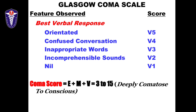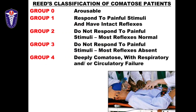Another popular classification is the REITS classification, which ranges from group 0 to group 4. Group 0 is basically arousable. Group 1 responds to painful stimuli and has intact reflexes. Group 2 does not respond to painful stimuli but most reflexes are normal. Group 3 does not respond to painful stimuli and most reflexes are absent. Group 4 is a patient who is deeply comatose with respiratory and circulatory failure.